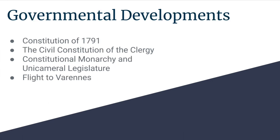There were also other governmental developments, specifically the Civil Constitution of the Clergy. Basically, it secularized religion and it created a national church with 83 bishops and dioceses. They also established a constitutional monarchy and a unicameral legislature.